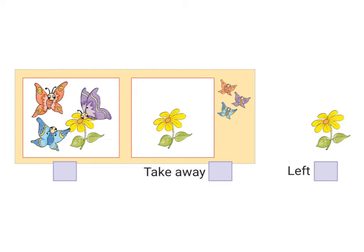Let's do something more fun now. How many butterflies do you see in this box? I see 1, 2 and 3 butterflies on this sunflower. There were 3 butterflies on the sunflower. Now all these 3 butterflies have flown away. So if we take away the 3 butterflies, how many butterflies are left? Can you see anything here? No, right? So there are 0 butterflies left on the sunflower.